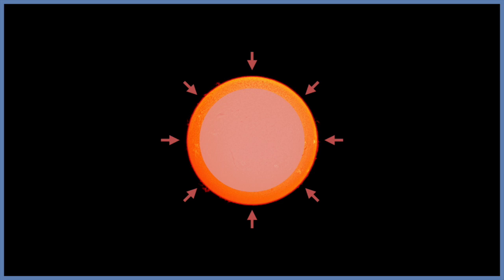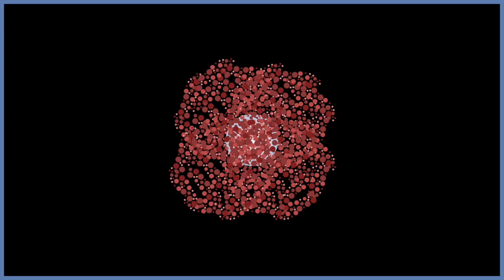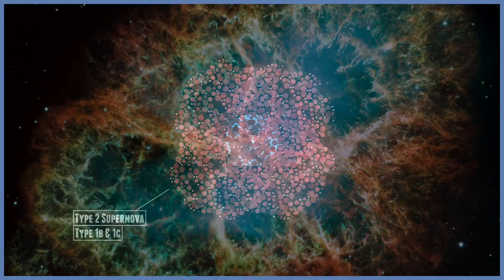This type of supernova is more of an implosion rather than an explosion, although to be honest, the material then rebounds off the dense core and is flung out into space. This is what's known as a type 2 supernova, although if you observe a star that seems to have a hydrogen envelope of layers around it, you can often call it a type 1b or a type 1c supernova.